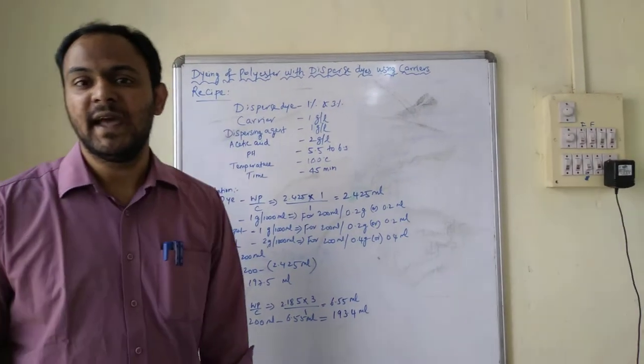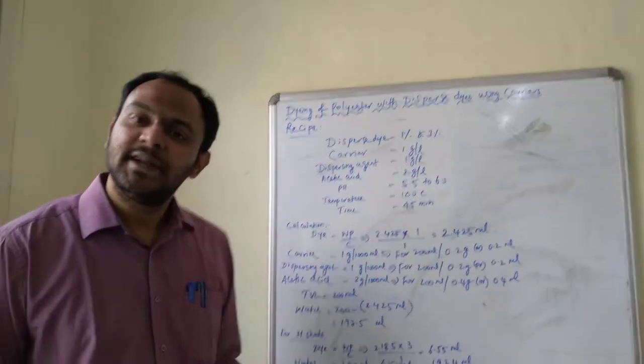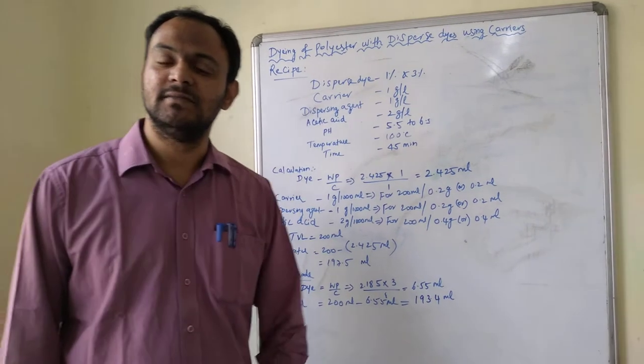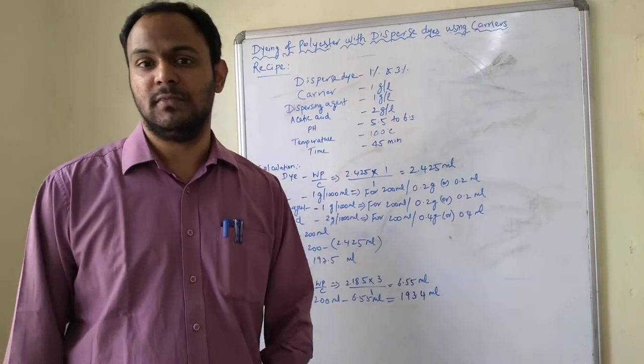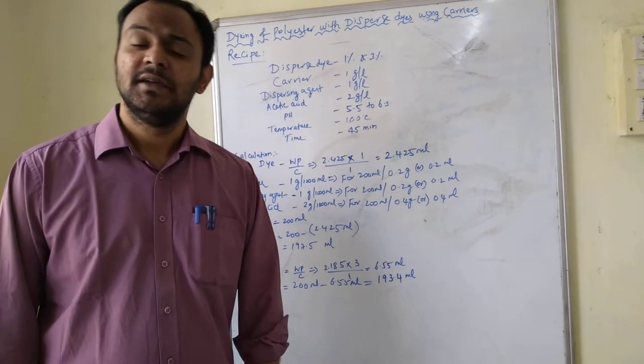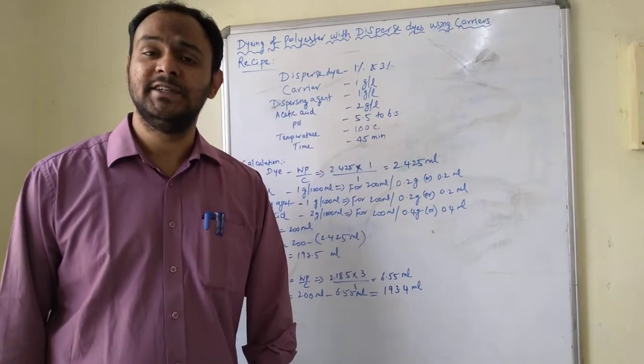So what is a carrier? Normally polyester dyeing can be performed by four different methods. One method is dyeing directly at boil without using carrier. That is possible, but you will not get light shades or deep shades, you will get only very pale shades.